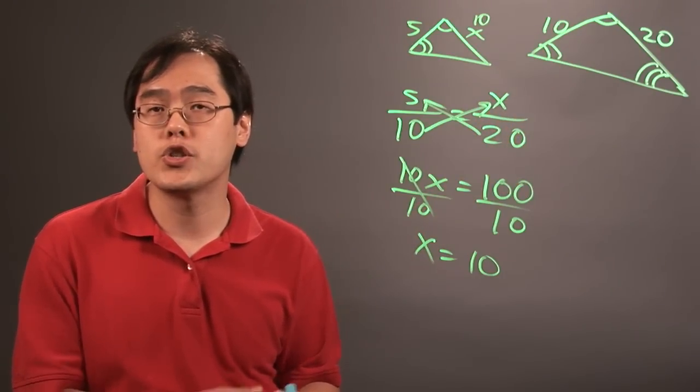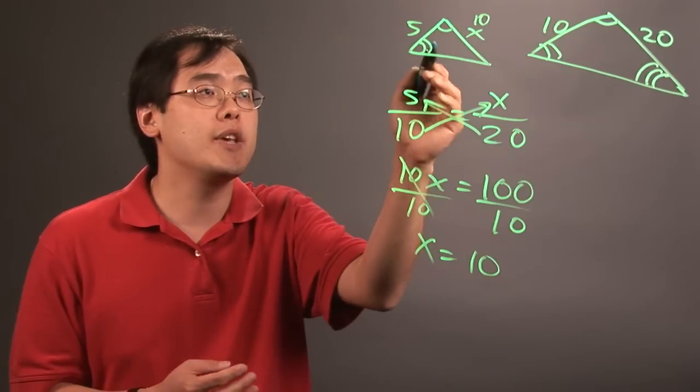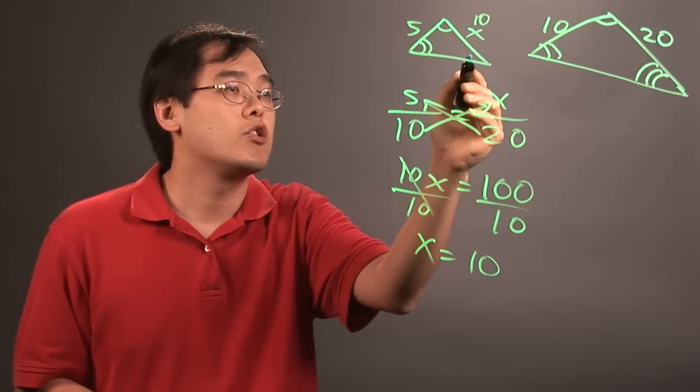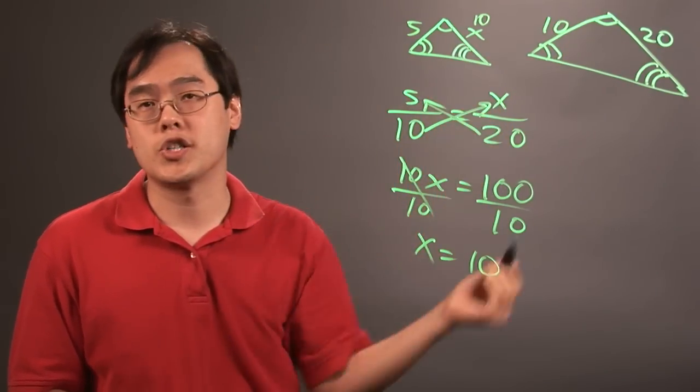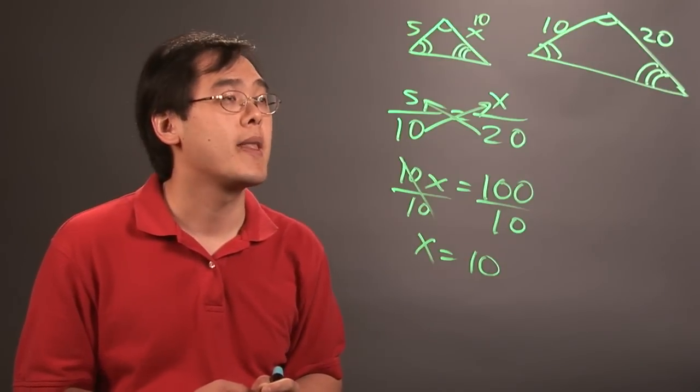So when it comes to using the proportions to checking similarity, you want to be given that the shapes are similar to begin with. So, I'm Jimmy Chang, and that's how to use proportions to check similarity.